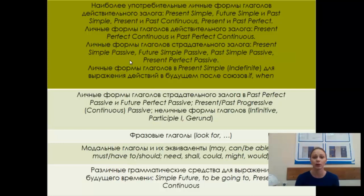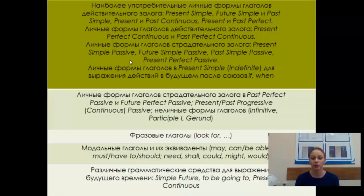Наиболее употребительные личные формы глаголов действительного залога: Present Simple, Future Simple, Past Simple, Present and Past Continuous, Present and Past Perfect, Present Perfect Continuous и Past Perfect Continuous. Личные формы глаголов страдательного залога: Present Simple Passive, Future Simple Passive, Past Simple Passive, Present Perfect Passive, Past Perfect Passive, Future Perfect Passive, Present и Past Progressive Passive. Неличные формы глаголов: Infinitive, Participle I (Present Participle) и Gerund. Также проверяется использование Present Simple для выражения действий в будущем после союзов if и when.